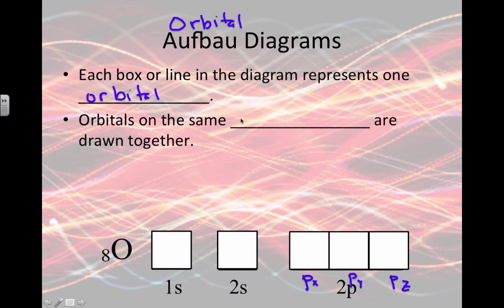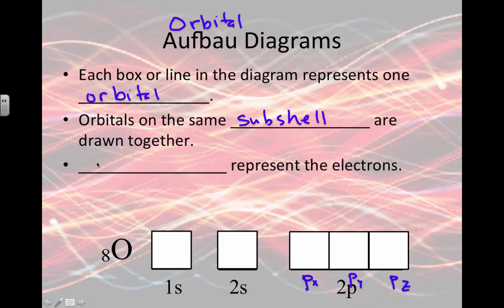Orbitals that are on the same subshell are always drawn together, so I put their boxes touching. Then we use arrows to represent the electrons.